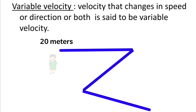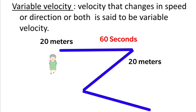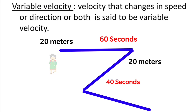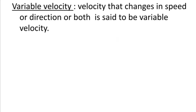Coming to the next type: variable velocity. The name itself indicates that velocity varies here. There is a change in velocity with respect to speed, direction, or both. For example, this person first traveled 20 meters in 60 seconds, then he turned and changed his direction. After that, he traveled 20 meters in 40 seconds, then again changed direction. So here he is changing both speed and direction — such type of velocity is called variable velocity.